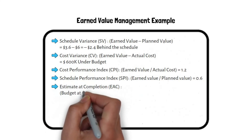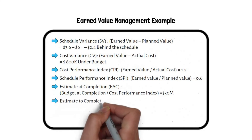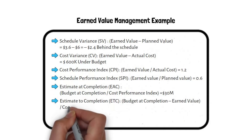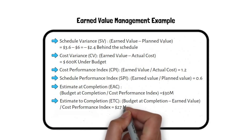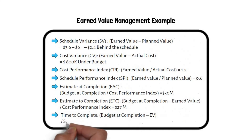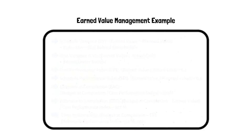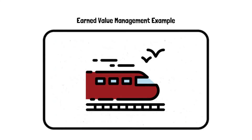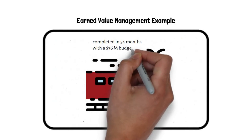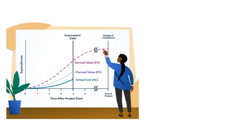Schedule Performance Index: EV divided by PV equals 0.6. Estimate at Completion: Budget at Completion divided by CPI equals 30 million dollars. Estimate to Complete: Budget at Completion minus EV divided by CPI equals 27 million dollars. Time to Complete: Budget at Completion minus EV divided by SPI equals 54 months. Taking this performance into consideration, this railway project will be completed in 54 months with a 36 million dollar budget.